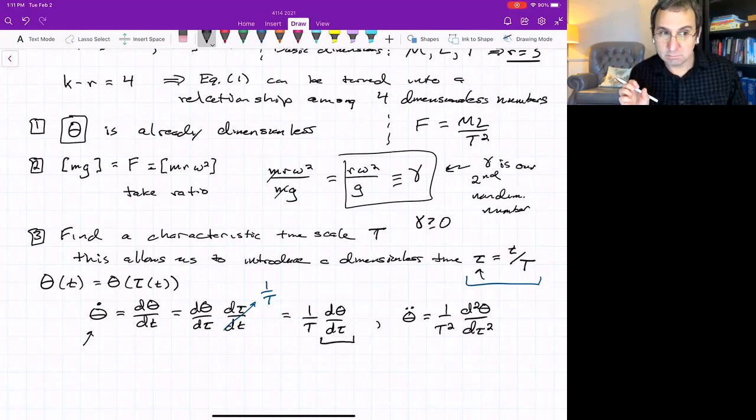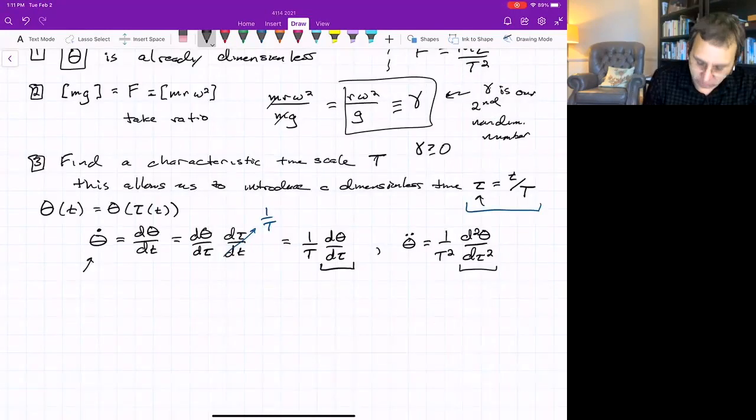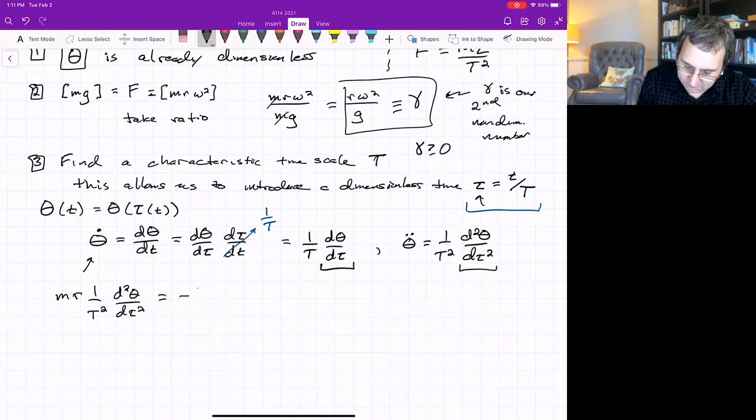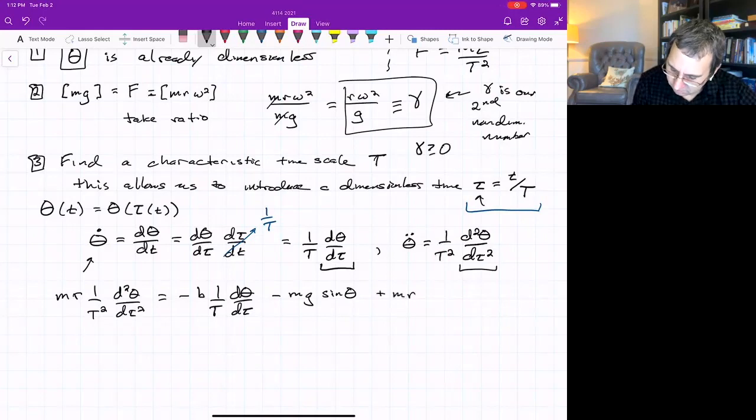And so this d theta d tau, since theta and tau are both dimensionless, this is dimensionless. So the second derivative of theta with respect to tau. Plug these two equations back into the original ODE. So we've got m r, one over T squared, d squared theta d tau squared. That was the left-hand side. Well, I guess we had an m. And then minus b, one over T, d theta d tau minus m g sine theta, plus m r omega squared, sine theta, cosine theta.